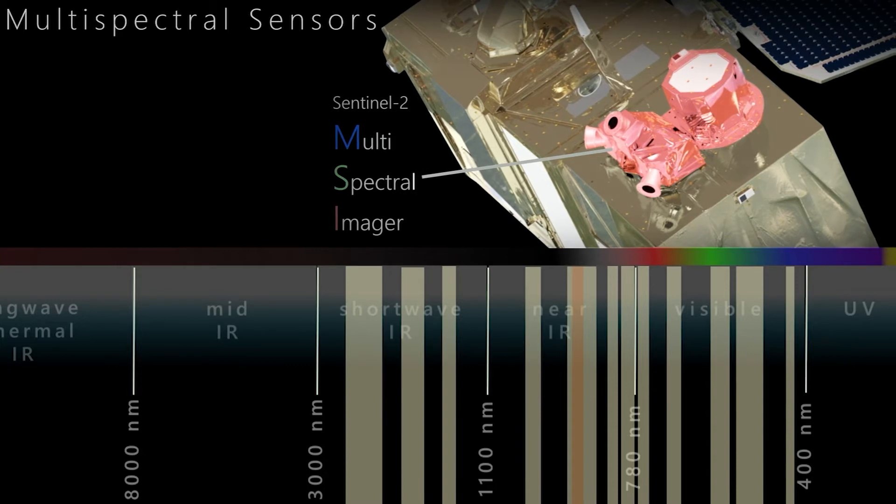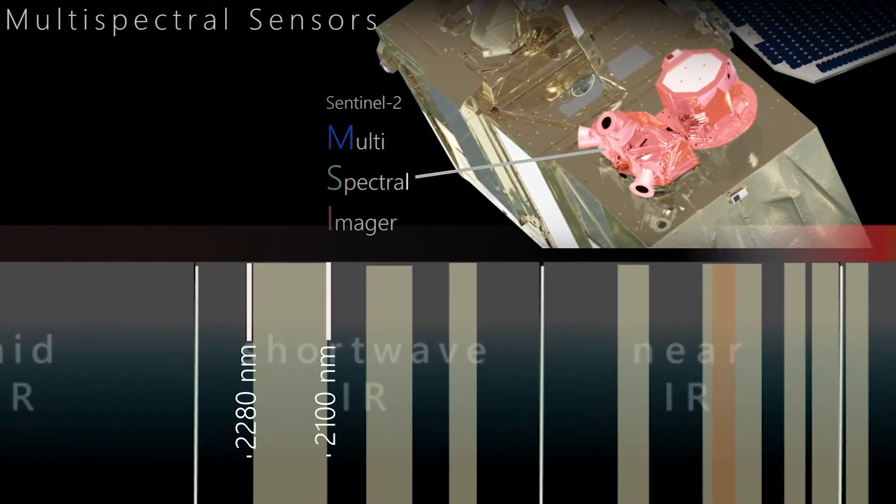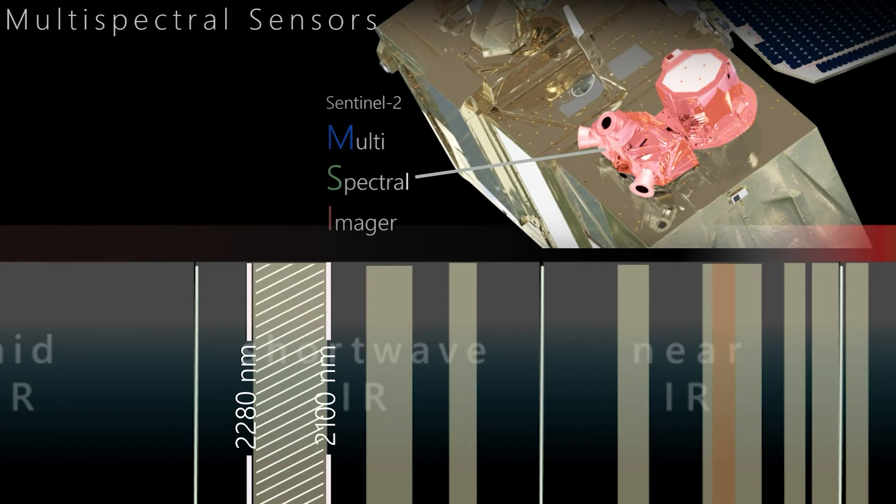If one looks closer at the wavelength ranges, we can see that a channel doesn't just correspond to one wavelength. Instead, it picks up a specific wavelength range and averages its information. This is necessary because the signal obtained from multiple wavelengths is much stronger than that of a single wavelength.